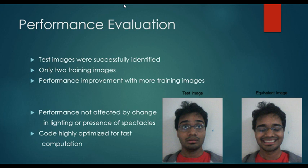The performance of this system: the test images were successfully identified, as seen in the running of the MATLAB code. The system used only two training images per test image, and performance will naturally improve with more training images. The performance is not affected by lighting or the presence of spectacles, as demonstrated in both examples in the MATLAB code. The code is highly optimized for fast computation, and the system delivers results extremely quickly.